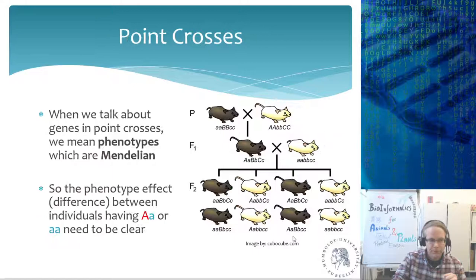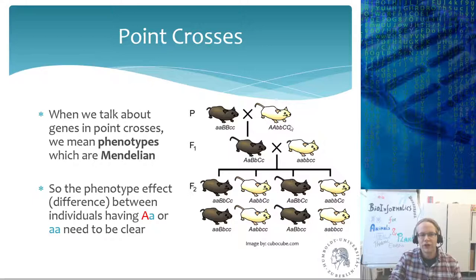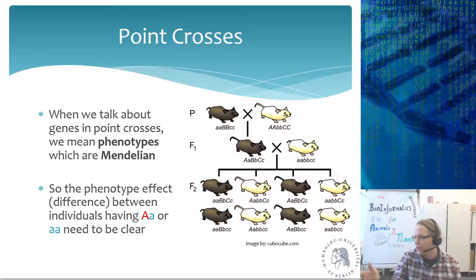When we talk about genes in point crosses, we mean Mendelian phenotypes — not genetics per se — and all this theory was developed long before we knew DNA existed. The point cross shown here is not a two-point cross but a three-point cross, because there are three different genes: A, B, and C. In a three-point cross, you can also determine the order of the genes — whether the order is A-B-C, A-C-B, or B-C-A.